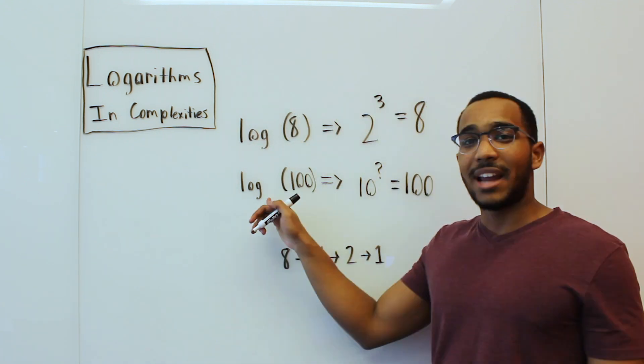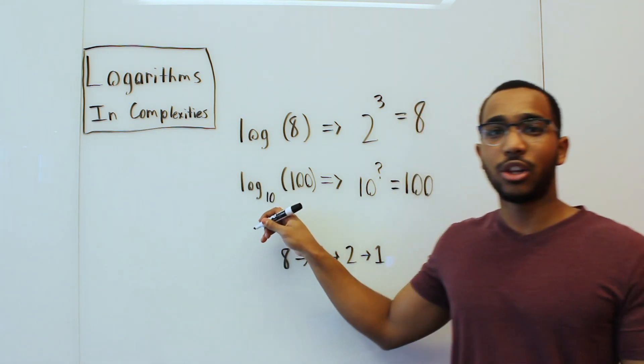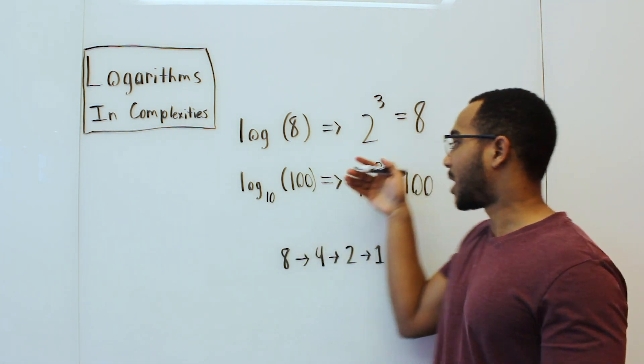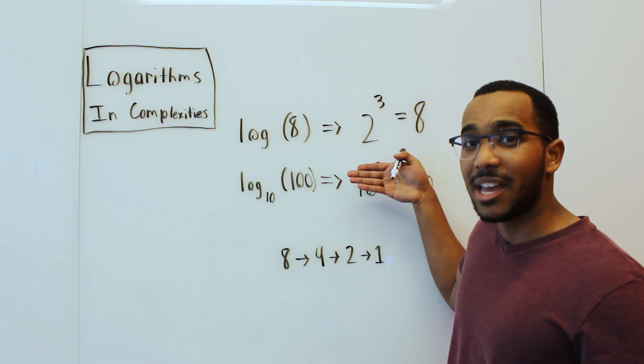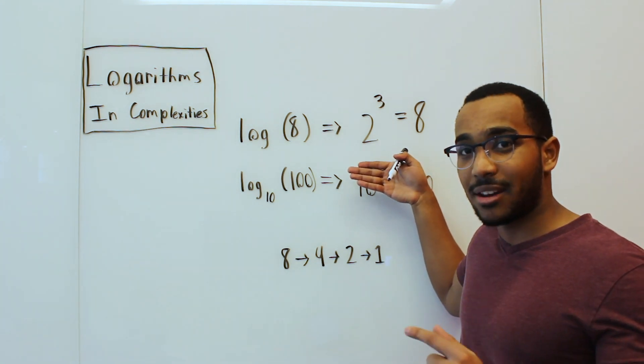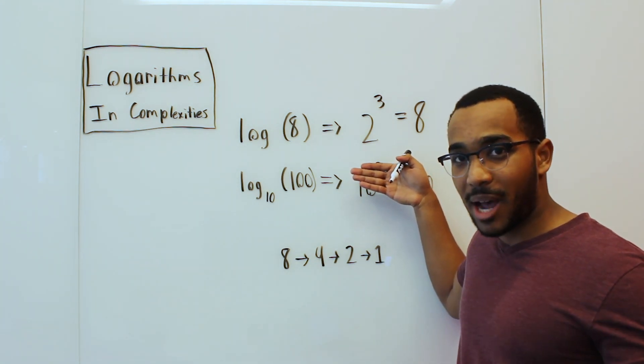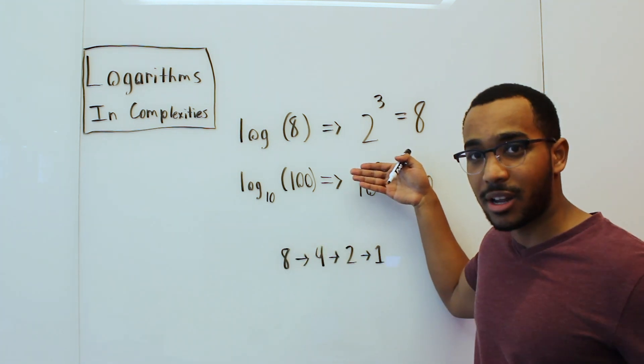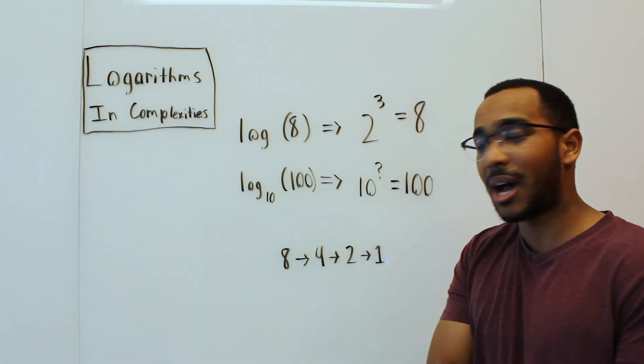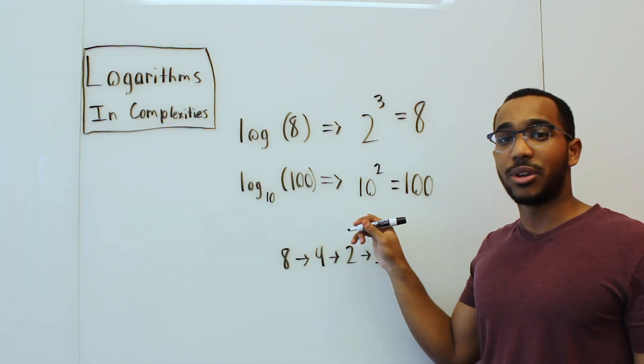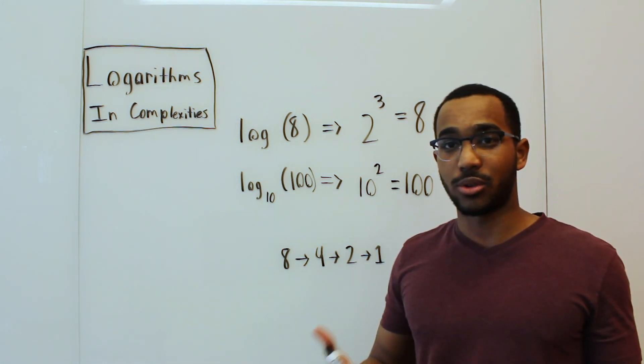Let's look at the second example. We're looking at log base 10. What does this ask me? My base is 10. What do I need to power 10 by to get the value 100? Well, the power I need to power 10 by to get the value 100 is 2. So 10 squared is going to be 100.